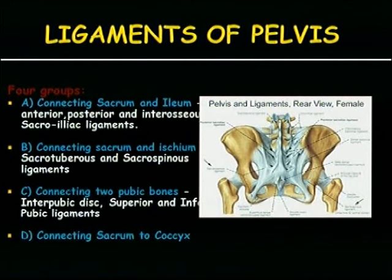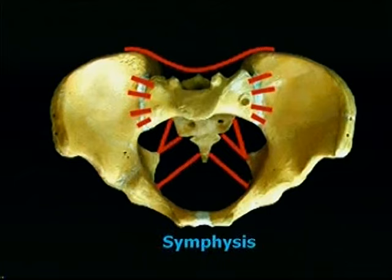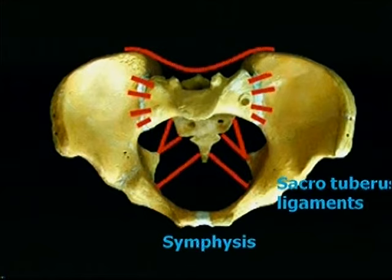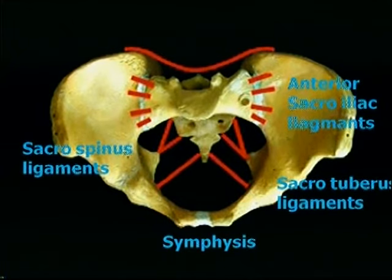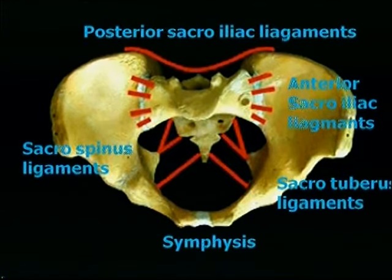This is an important slide showing the ligaments of the pelvis, because when there is an injury, either the bone will break or a ligament will be damaged. There are certain ligaments connecting various parts of the pelvis: the symphysial ligament with anterior, superior, and inferior components; the sacrotuberous ligament connecting the sacrum to the ischial tuberosity; the sacrospinous ligament connecting the sacrum to the ischial spine; and the anterior sacroiliac ligament. The posterior sacroiliac ligaments are very important because management depends on whether they are ruptured or intact. These ligaments provide important guidelines for management.